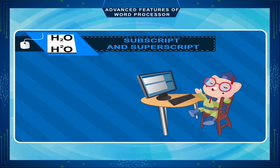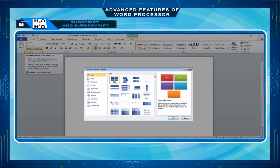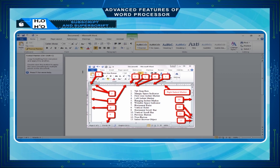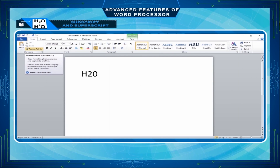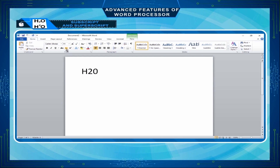Subscript and Superscript. A subscript or superscript is a number, figure, symbol or indicator that is smaller than the normal line of type and is set slightly below or above it. Subscripts appear below the baseline while superscripts are above. To type in subscript in MS Word 2010, take the steps as follows.